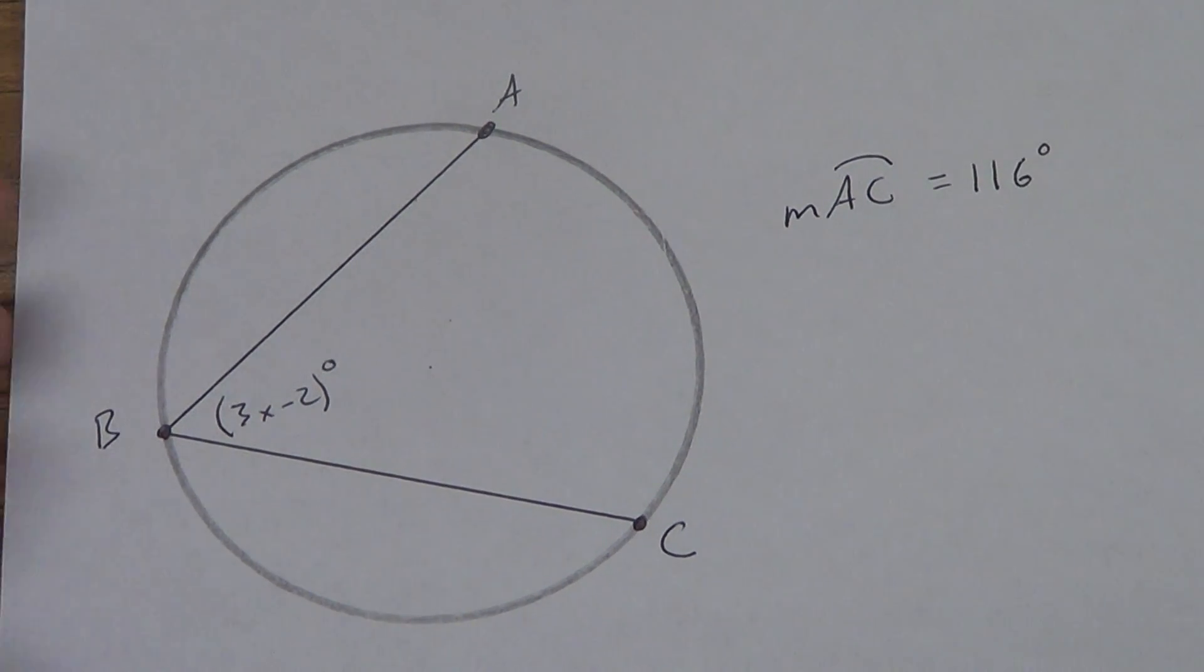Okay, we're going to do some examples for Lesson 10.4 now. Quick reminder of our theorems. An inscribed angle equals half of its intercepted arc, or an intercepted arc is double its inscribed angle. If a right triangle is inscribed in a circle, then the hypotenuse has to be the diameter. If a triangle is inscribed in a circle and one side is a diameter, then that triangle has to be a right triangle. If two inscribed angles intercept the same arc, they have to be congruent to each other. And finally, if a quadrilateral is inscribed in a circle, then the opposite angles must be supplementary, and that can be reversed.